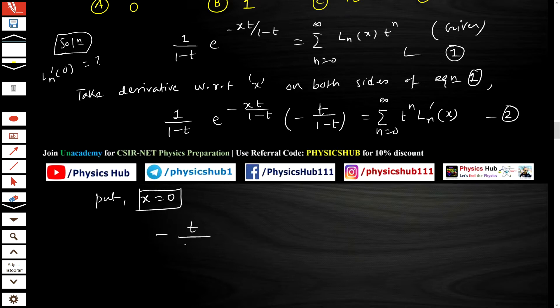If you put x equal to 0, what you get is -t/(1-t)^2, which equals the sum from n=0 to infinity of t^n * ln'(0).